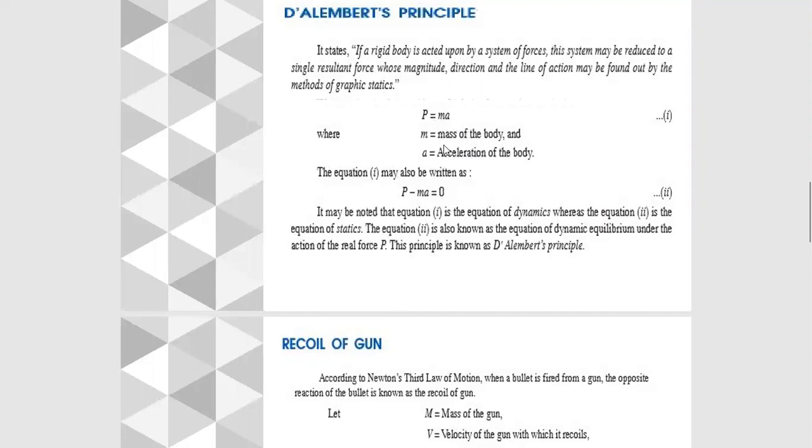This equation may be written as P - ma = 0. This equation is known as d'Alembert's principle equation, which is a dynamic equation of equilibrium under the action of real forces.